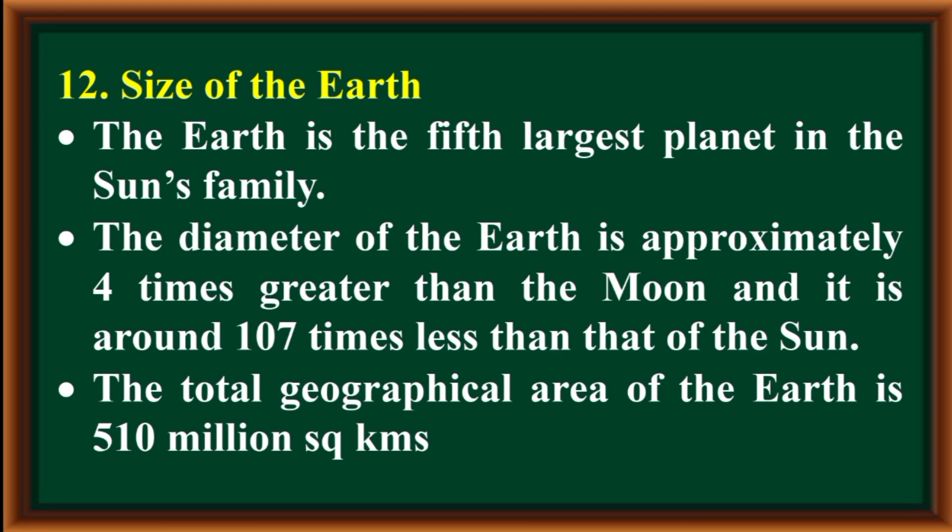Size of the earth: the earth is the fifth largest planet in the sun's family. The diameter of the earth is approximately four times greater than the moon and around 107 times less than that of the sun. The total geographical area of the earth is 510 million square kilometers.